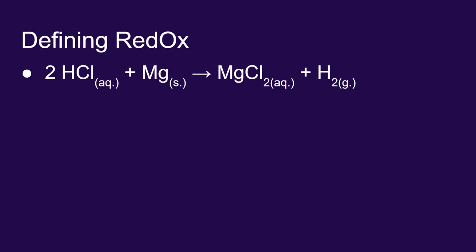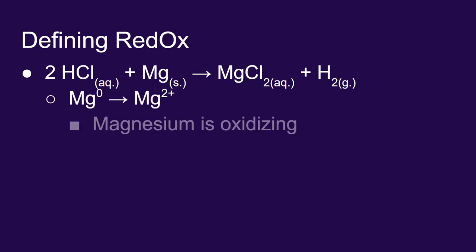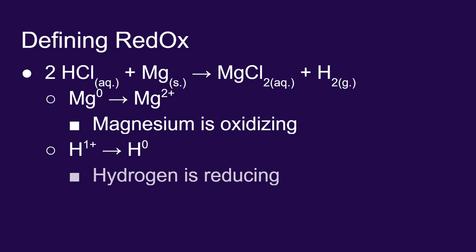If we go back to the example that we used in a previous video, we saw that magnesium was oxidizing and that the hydrogen in this example was reducing. The chlorine, remember, was a spectator. It wasn't changing its oxidation state.